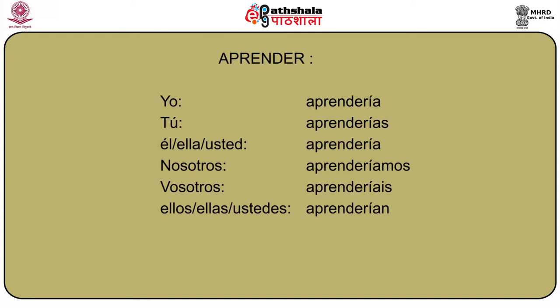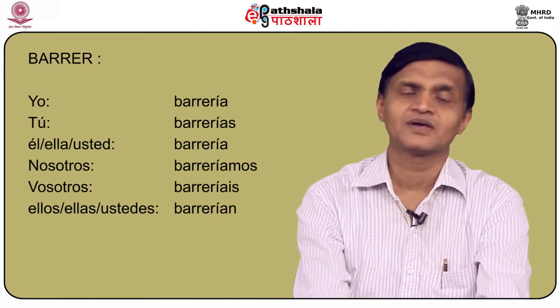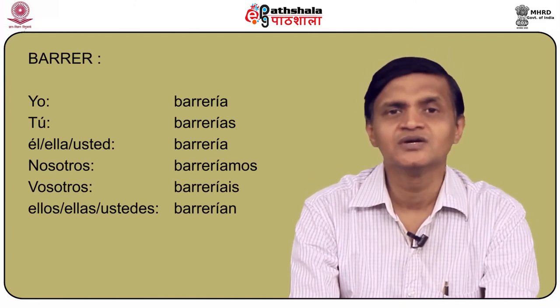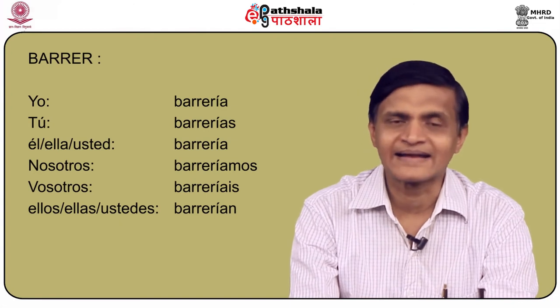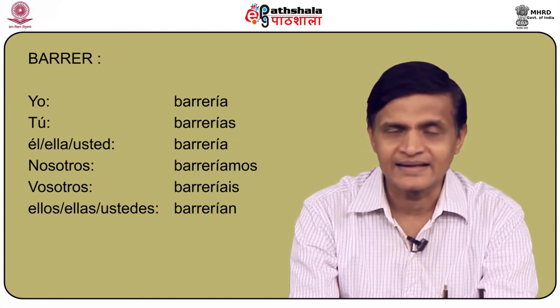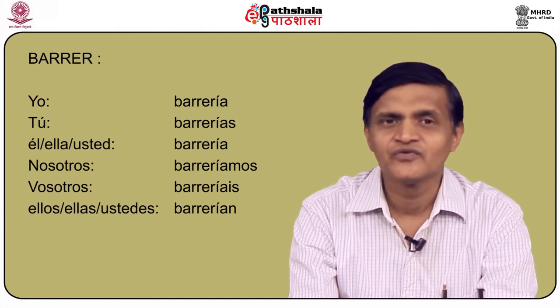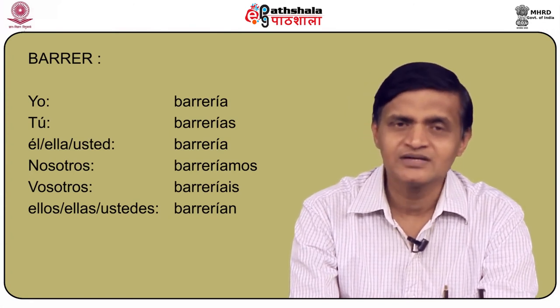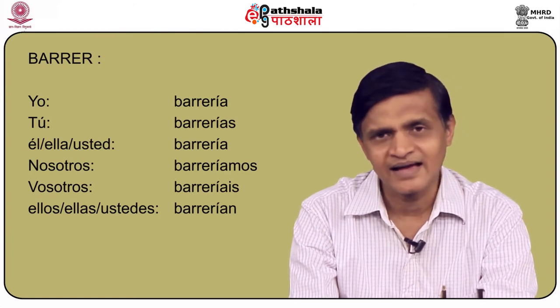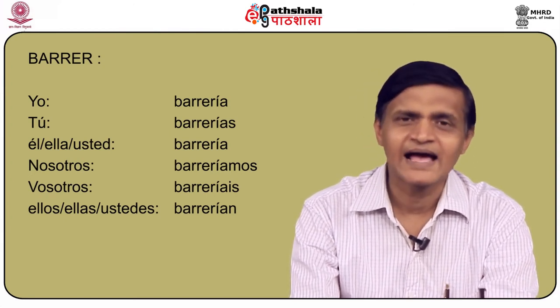You can see that all the accents are put in all the conjugations of the conditional tense — in aprender and in all other verbs also. The next verb, which we've already dealt with in the future, is barrer, to sweep. You conjugate barrer in the conditional as: yo barrería, tú barrerías, él/ella/usted barrería, nosotros barreríamos, vosotros barreríais, and ellos/ellas/ustedes barrerían.